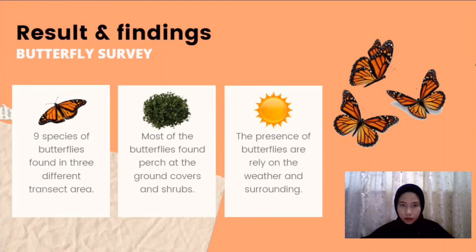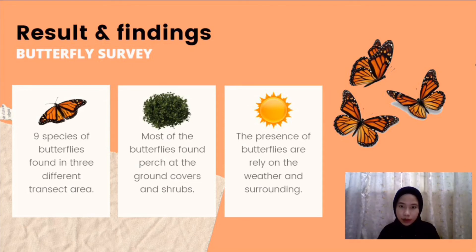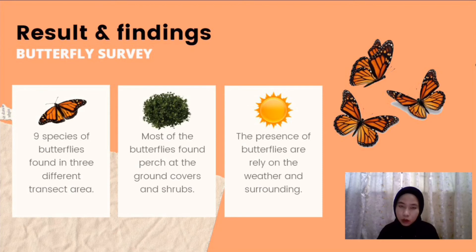For the results and findings of the butterfly survey, nine species of butterfly were found in the area across three different transect zones, with most butterflies found at ground cover and shrub level. The presence of butterflies also relies on weather and surrounding conditions — during rainy days, butterflies are harder to find compared to hot days. The surrounding area must also be considered because if the area receives low sunlight, it is also hard to find butterflies, as they need sunlight to keep their wings active.